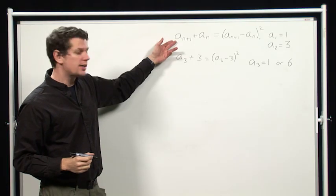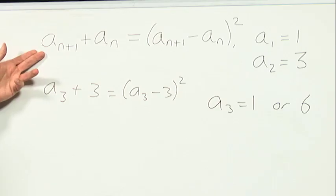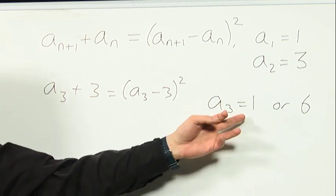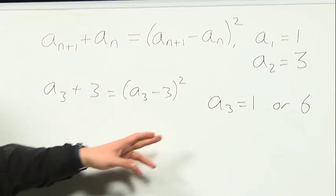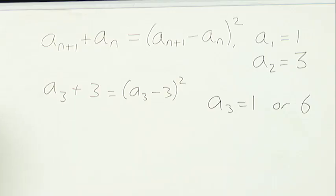Now, this equation says that each term only depends on the term before it, and we know what happens after we've got a term 1 because a1 was 1. So in order to explore this more, I'm going to see what happens if a3 is 6 and solve another quadratic.